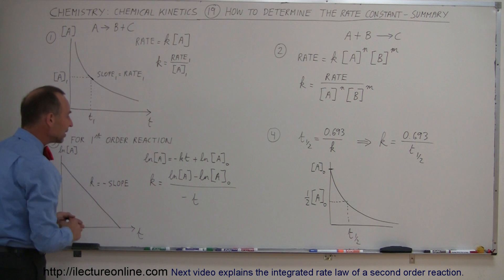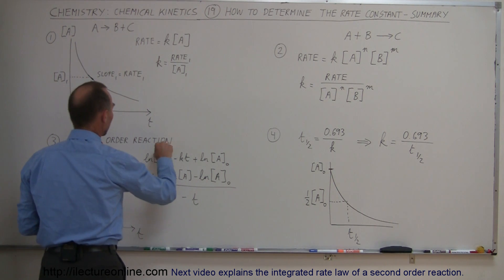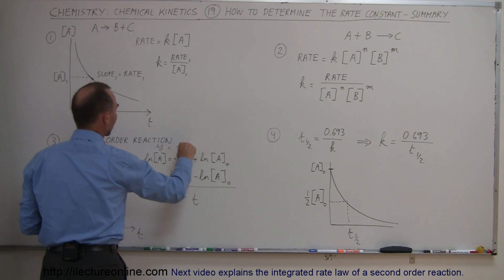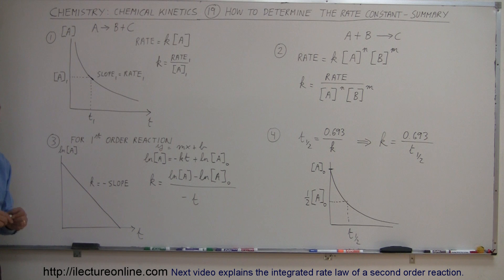K is then of course the slope of that linear relationship, that this looks just like the Y equals MX plus B equation in algebra, so again, it represents the rate at which the reaction is taking place, the larger K is, the steeper slope, the faster the reaction takes place.